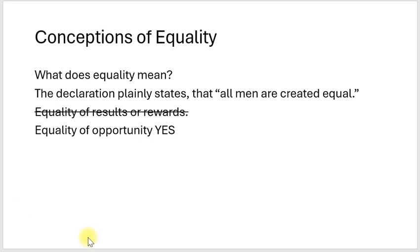One view is that equality means equality of results or equality of rewards — and there's a strikethrough on that. In the American system, by and large, we do not take this as the view of equality. We see the appropriate view as equality of opportunity, not equality of results. This is very much a communist type of system, and we in America have rejected that and seen how it has not worked. We believe in equality of opportunity.